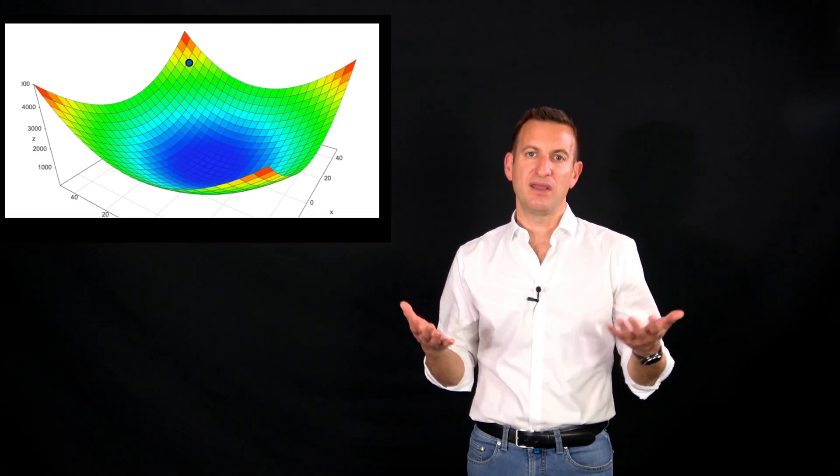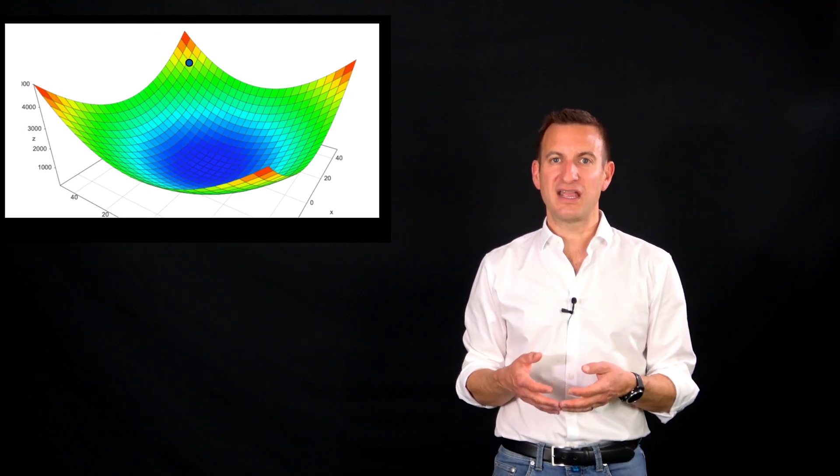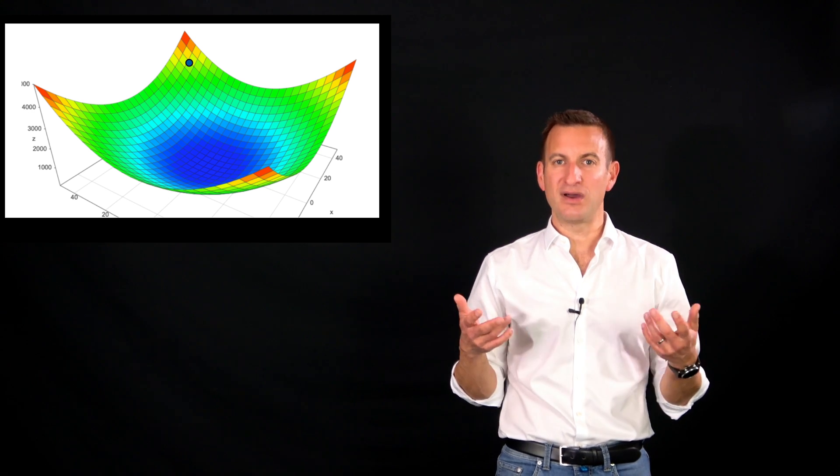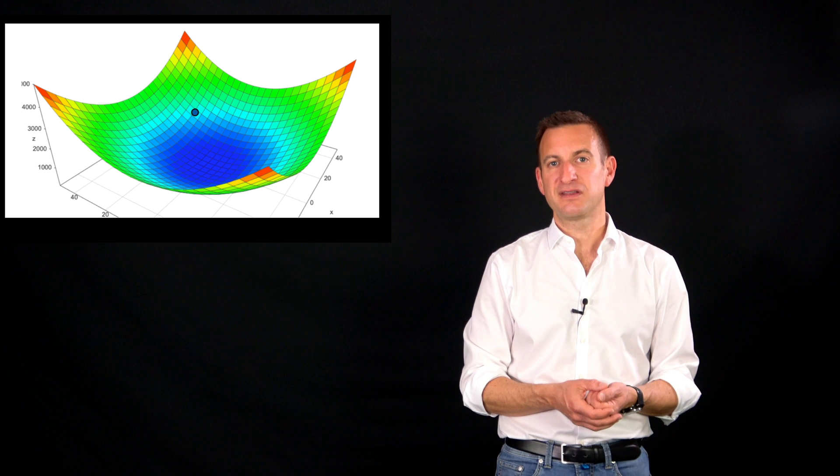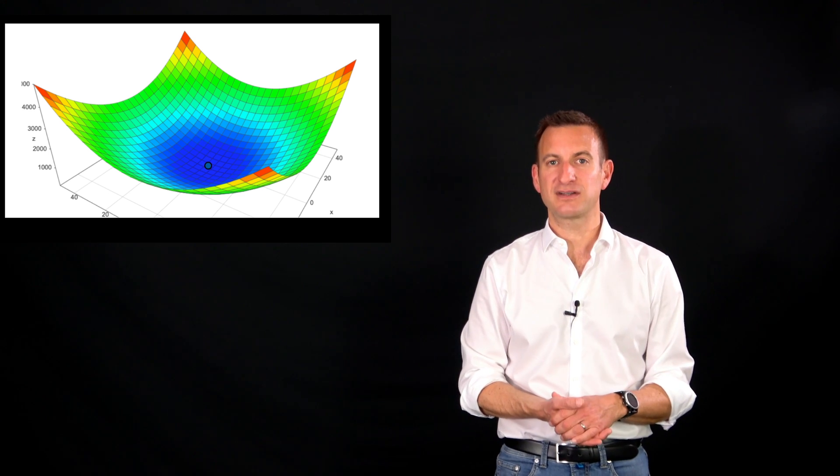We can do these things not only in 1D, we can also do this in multiple dimensions, for example in 2D. Then we have a 2D function and the gradient direction is now a direction vector, but we can follow the negative direction vector and also minimize this function.